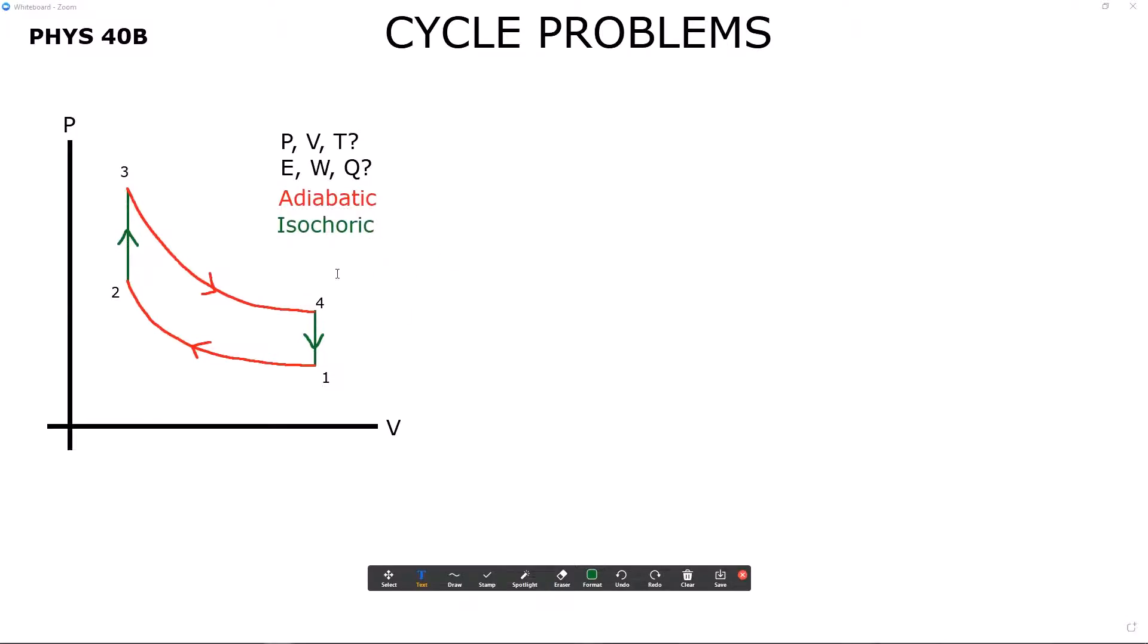You might not have two isochoric and two adiabatic processes. What's important is that you figure it out. Maybe you have isobaric processes, isothermal processes. Maybe you don't have adiabatic processes. Maybe you have several types. It really doesn't matter because what we want to do is kind of go point by point, process by process solving for all these potential variables that we could be given.